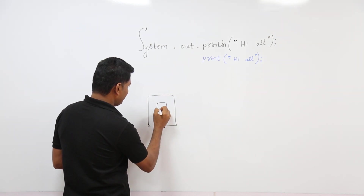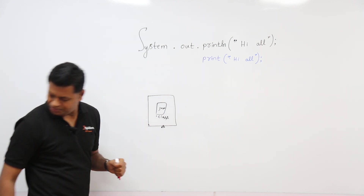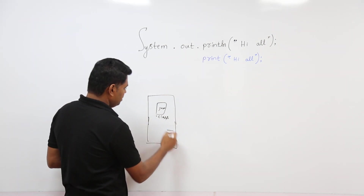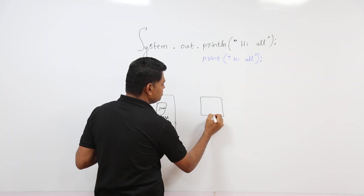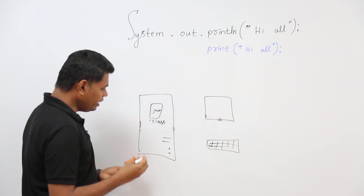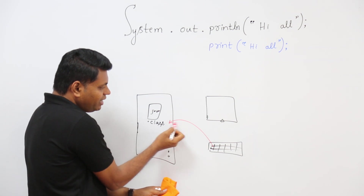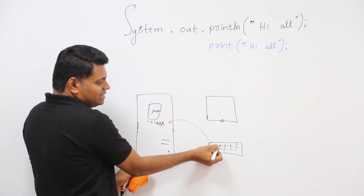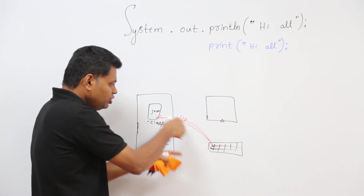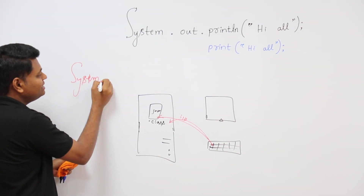Let me give you a realistic example. Imagine my Java program — a .class file — is running on a system with a CPU, a monitor, and a keyboard. When I enter something on the keyboard, that data comes from the keyboard into my program. Since it's coming into the program, we call it input.